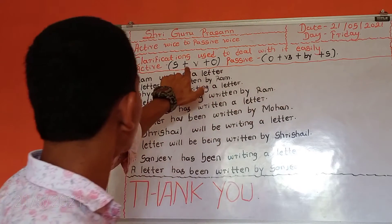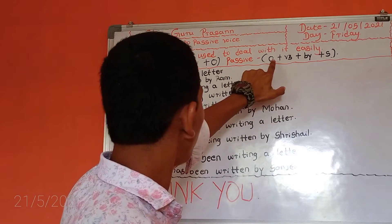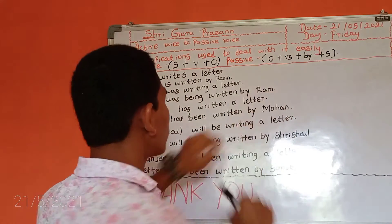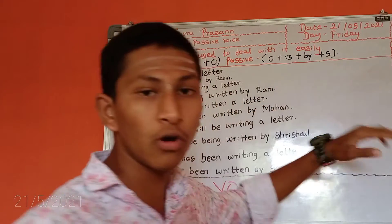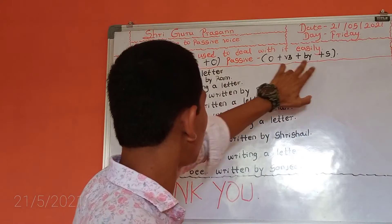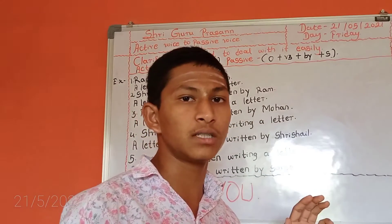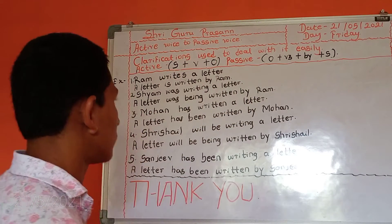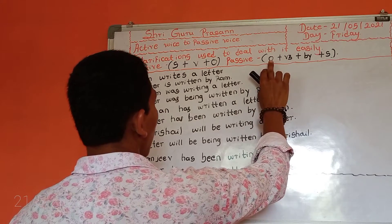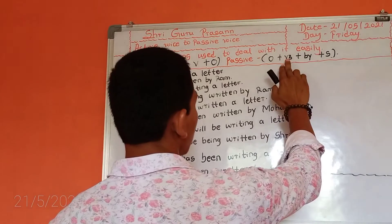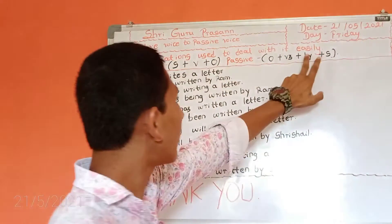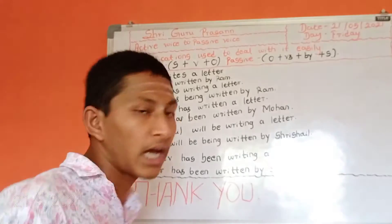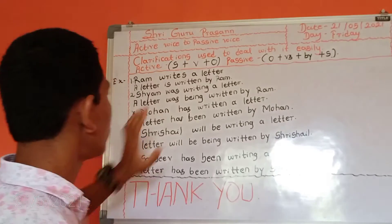And in passive voice, the object will come first. The object will take the place of subject and the subject will go to last. In passive voice, however you convert — while converting active to passive voice — you have to remember these rules: the object will come first, the verb will be in third form (V3), and you have to add 'by' plus the subject. The subject will go last.